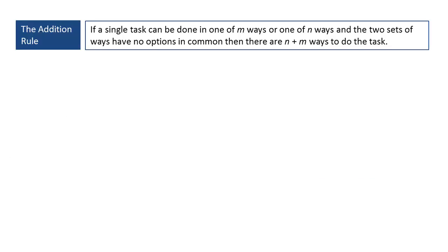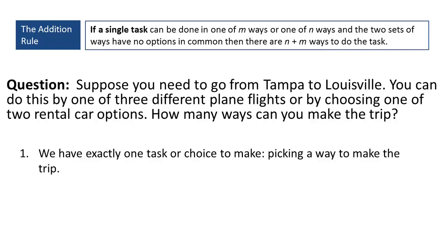This brings us to our first counting rule. The addition rule says if a single task can be done in one of M ways or one of N ways, and the two sets of ways have no options in common, then there are a total of N plus M ways to do the task. Let's walk through all of its parts and see how it applies to our travel question.